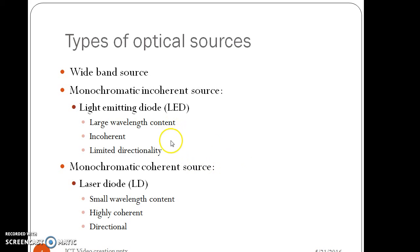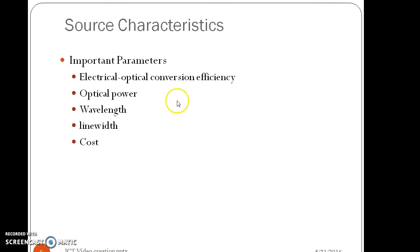There are certain characteristics listed in this slide. Large wavelength content, incoherent, limited directionality are about LEDs, whereas small wavelength content, highly coherent, directional are for laser diode. There are some optical source characteristics which are to be taken care of.